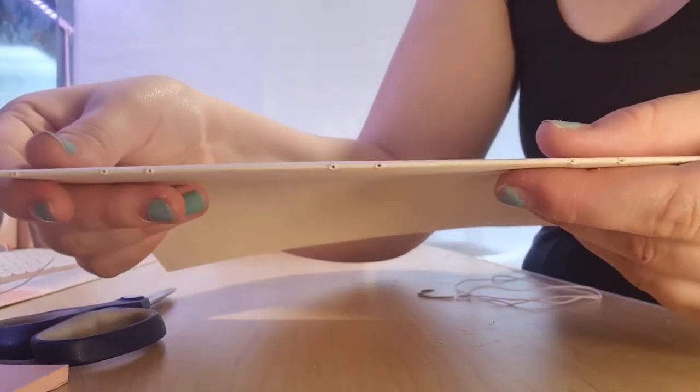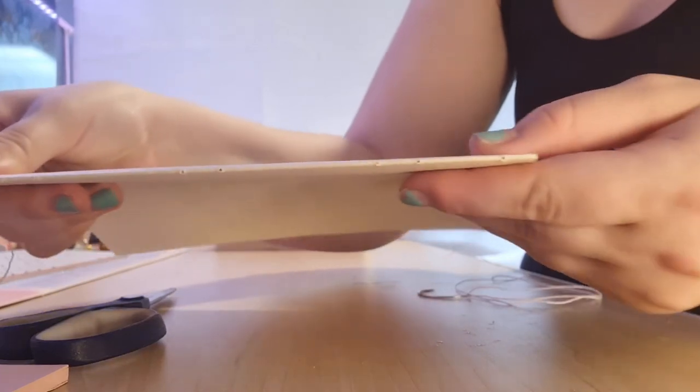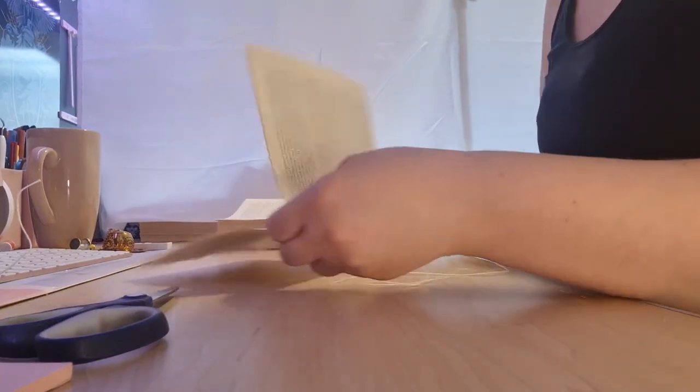As you can see I've already punched my text block with eight holes per signature. I put six of them quite close together just because that is my personal preference, but as you go through your binding journey you'll find what works best for you.